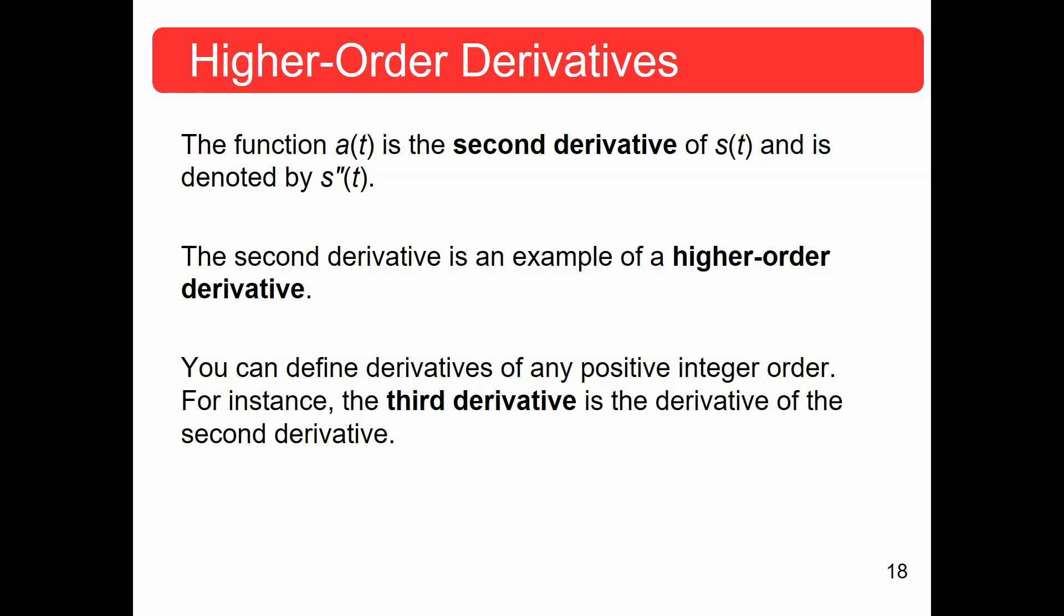Now, the second derivative is a higher order derivative. And you can find derivatives for pretty much any positive integer order. Third derivative, fifth derivative, 27th derivative, it doesn't matter.